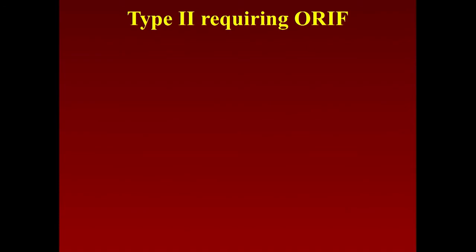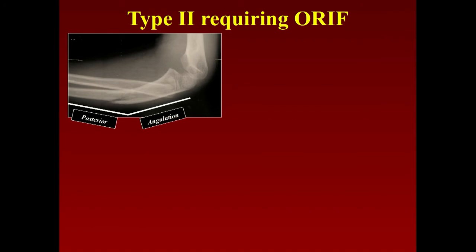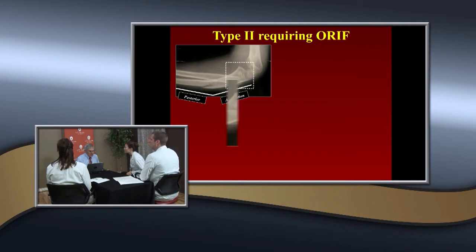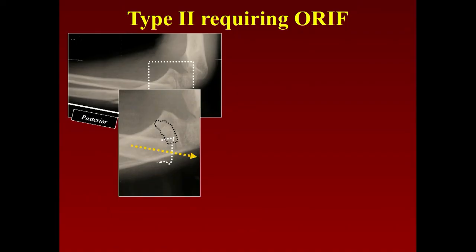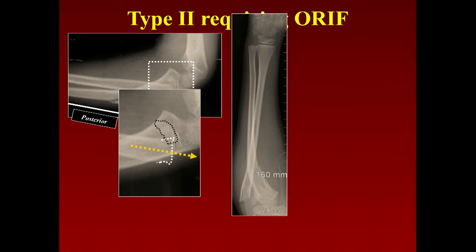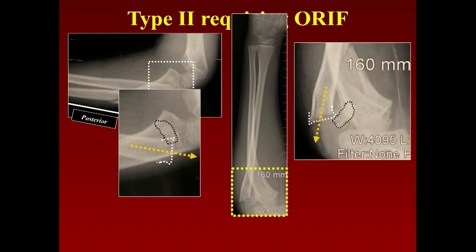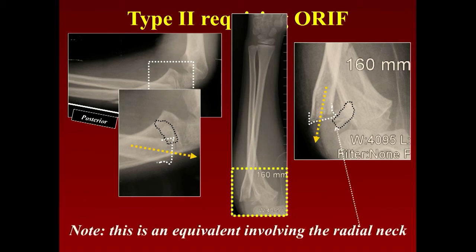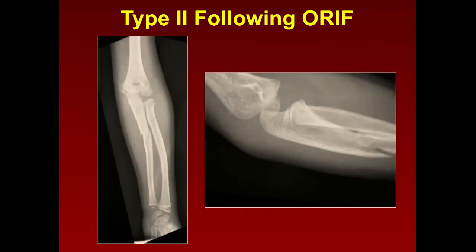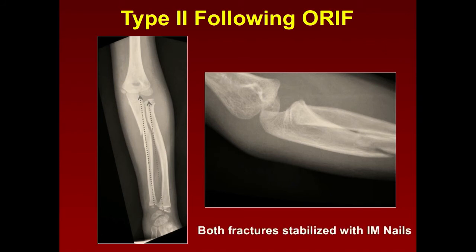Here's one of the few Type 2 cases I've operated on. You can see posterior angulation and a fracture of the radial neck — remember, many Type 2s occur as equivalents, sometimes as complete fractures rather than greenstick. On the AP view, displacement and radial bowing are visible. This is an equivalent involving the radial neck, reduced in extension and stabilized with retrograde intramedullary nails in both fractures.